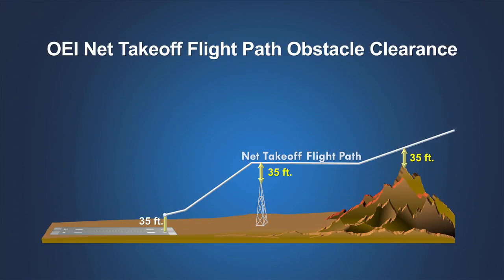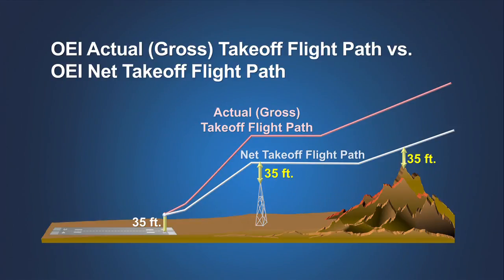Clearing an obstacle by 35 feet doesn't sound like much of a safety margin, but remember that the net takeoff flight path is defined as the actual flight path — often referred to as the gross path — minus the prescribed reduction in performance. The intent is to provide a reasonable safety margin should the airplane's climb performance following an engine failure be less than predicted, due to operational variations in gross weight, thrust, airplane drag, pilot technique, and wind effects. For example, if a two-engine airplane is 10,000 feet beyond the start of the takeoff flight path during the second segment climb, the difference between the gross height and the net height will be 0.8% of 10,000 feet, or 80 feet. Thus, the requirement that the net takeoff flight path must clear the obstacle by 35 feet means the airplane will actually clear the obstacle by as much as 115 feet.